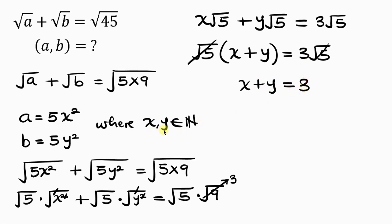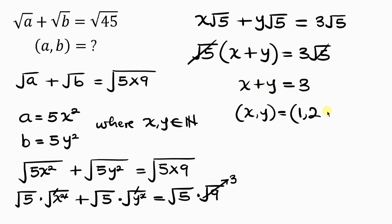Since x and y are integers, the values for x and y can be: when x is 1, y can only be 2, so 1 plus 2 equals 3. Also, since the expression is symmetric, swapping x and y gives the same result — so x can be 2 and y can be 1.